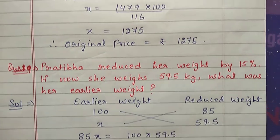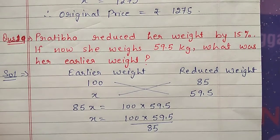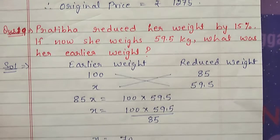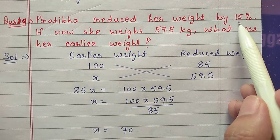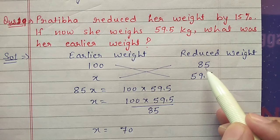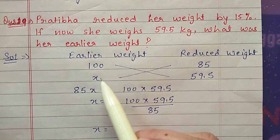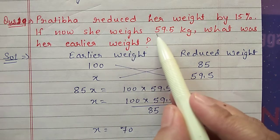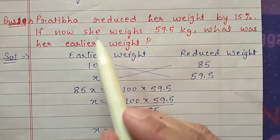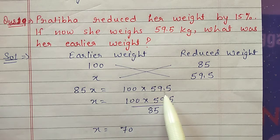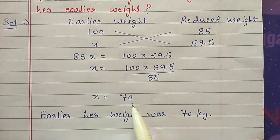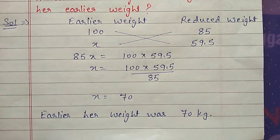Question number 19: Pratibha reduced her weight by 15 percent; if she now weighs 59.5 kg, what was her earlier weight? Suppose her earlier weight was 100 and she reduced 15 percent, so reduced weight corresponds to 85 (100 minus 15). Let her earlier weight be x, so after reducing her weight is 59.5. Cross multiply: 85x equals 100 into 59.5. Shift 85 to the other side and cancel — x equals 70 kg. Her earlier weight was 70 kg.